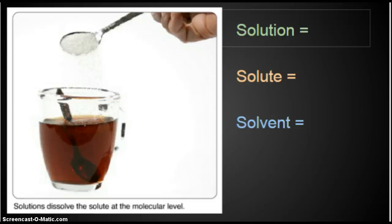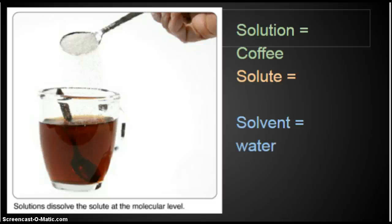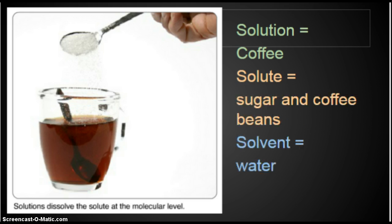Solutions dissolve the solute at a molecular level — it's not just that there are chunks we can't see, it's that it breaks the molecules apart into individual molecules. It doesn't break the sugar into something else; it just breaks the big chunks of sugar into little tiny molecules with water molecules in between. In this case, my solution is coffee. My solvent would be the water. What do I dissolve in water to get coffee? The solute would be the sugar and the coffee beans, because the coffee is dissolved in the water, and in this case we're also adding sugar. So there can be more than one solute.